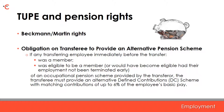And finally, the obligation on the transferee to provide an alternative pension scheme. To complement the pensions exemption in TUPE, the transferee is obliged in certain situations to provide a minimum level of alternative pension provision. If any of the transferring employees immediately before the transfer was a member or was eligible to be a member of an occupational pension scheme provided by the transferee, the transferee must provide an alternative defined contribution scheme with matching contributions of up to 6% of the employee's basic pay. The obligation applies even if the transferee scheme was a defined benefit scheme. If the transferee scheme was a defined contribution scheme, there is an additional requirement that the transferee must also have made or have been required to make contributions in addition to the employee's contributions for the obligation on the transferee to provide a replacement scheme to come into force.